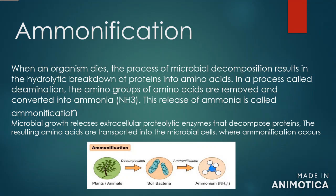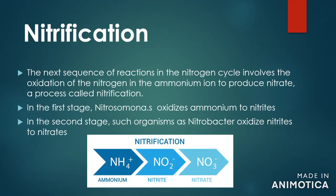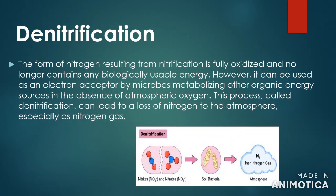Microbial growth releases extracellular proteolytic enzymes that decompose proteins. The resulting amino acids are transported into the microbial cells where ammonification occurs. Nitrification: the next sequence of reactions in the nitrogen cycle involves the oxidation of nitrogen in the ammonium ion to produce nitrate, a process called nitrification. In the first stage, Nitrosomonas oxidizes ammonium to nitrite.